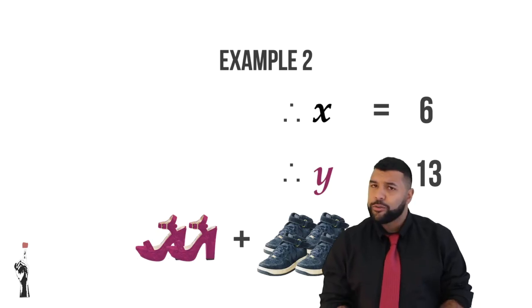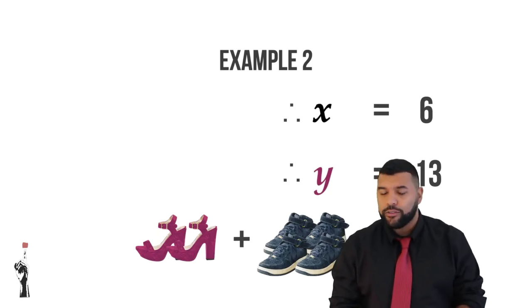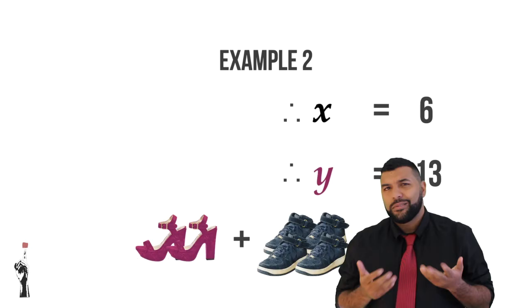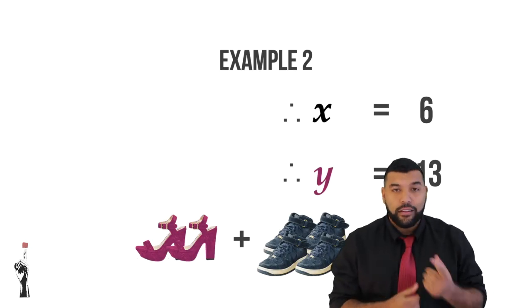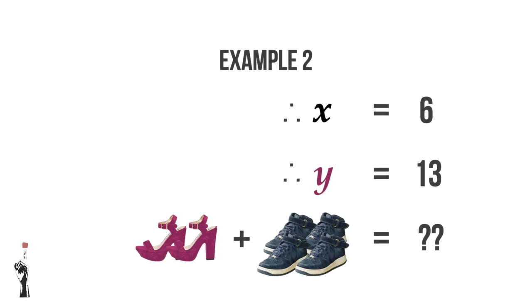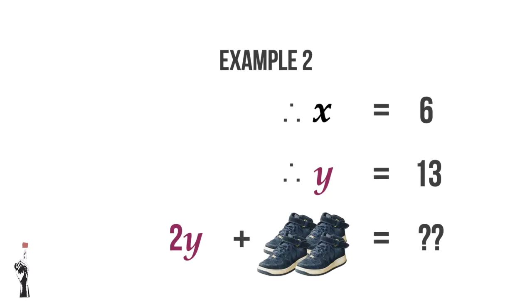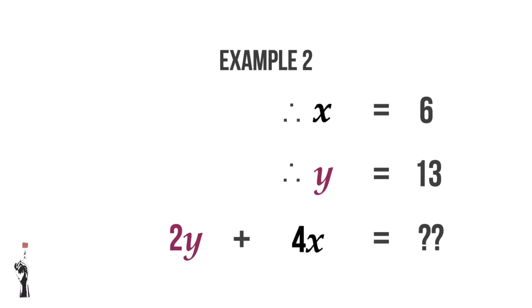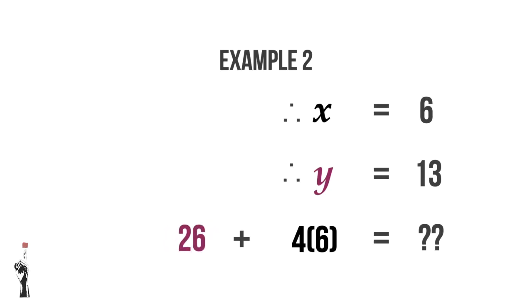Now in the last line, we have 2 pink shoes plus 4 black shoes equal to some value. First, we're going to replace the pink and the black shoes with variables. So the two pink shoes become 2Y, and the four black shoes become 4 times X. We can now replace Y with 13 and X with 6. So 2 times 13 equals 26, and 4 times 6 gives us 24, to give us an answer of 50.